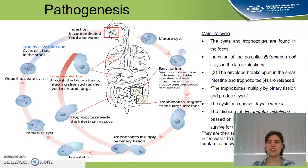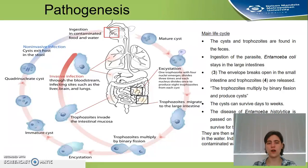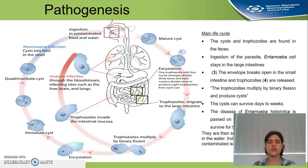Pathogenesis: the cysts and trophozoites are found in feces. It is ingested as an immature cyst, then moves through the intestines as a mature cyst. It then excysts into different small trophozoites and becomes infective. It can live for a long time inside the intestines and is then excreted again in the feces.